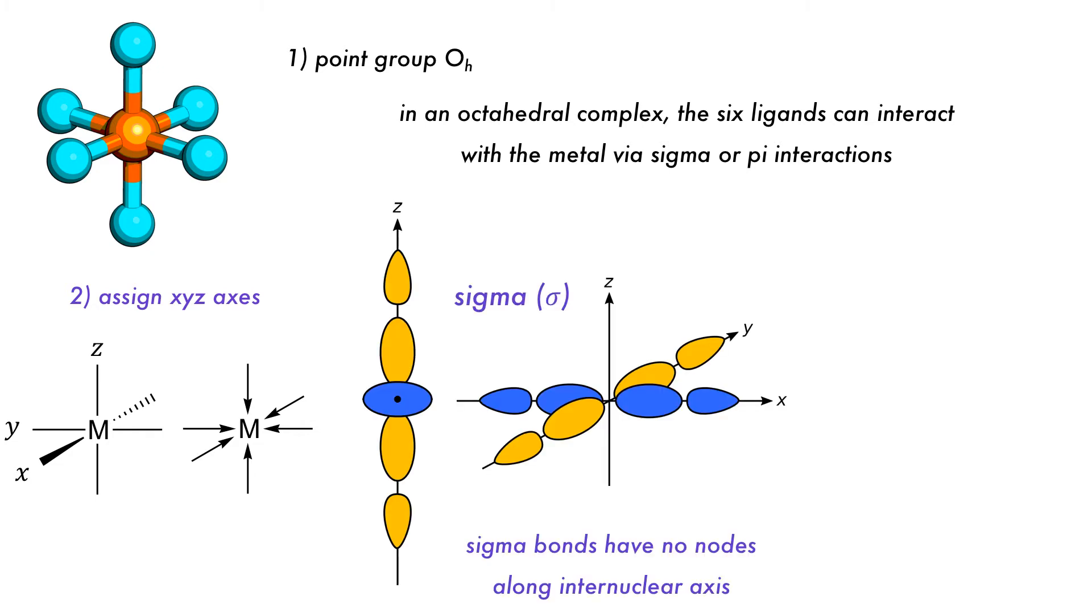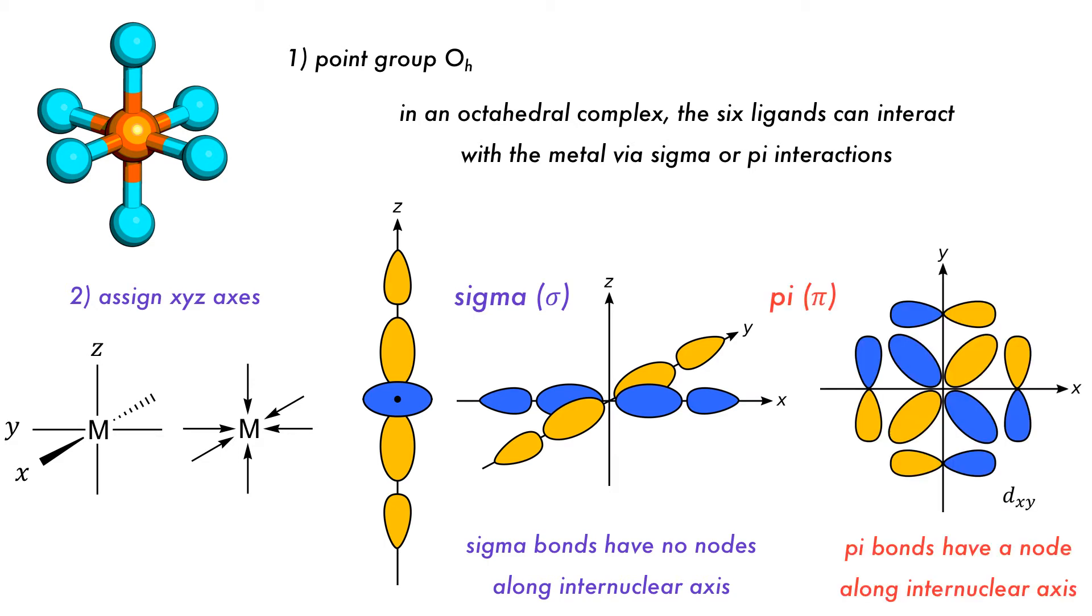This means that the dz-squared orbital will be able to have sigma interactions with the ligands that approach along the z-axis, and the dx-squared minus y-squared will be able to have sigma bonds along the x and y axes. The other three d orbitals will engage primarily in pi-type bonding, but cannot form sigma bonds in this complex because they have nodes along the internuclear axis.